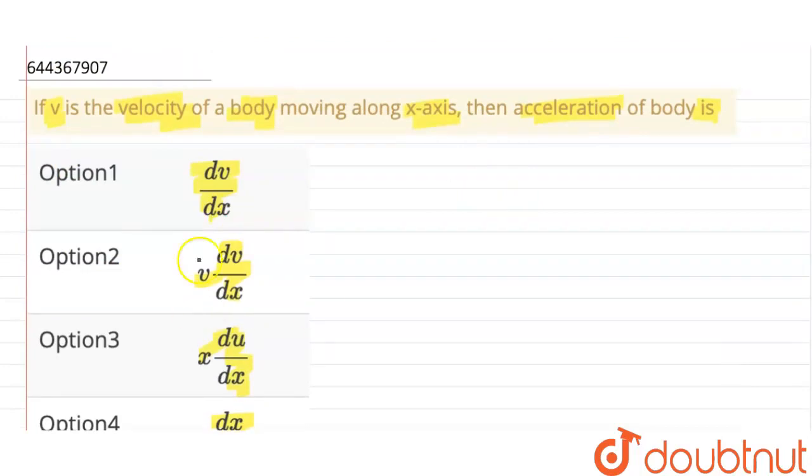Alright, so let's write the basic relation and then find the relation between velocity and displacement. Now we know velocity is rate of change of displacement, that is dx by dt.